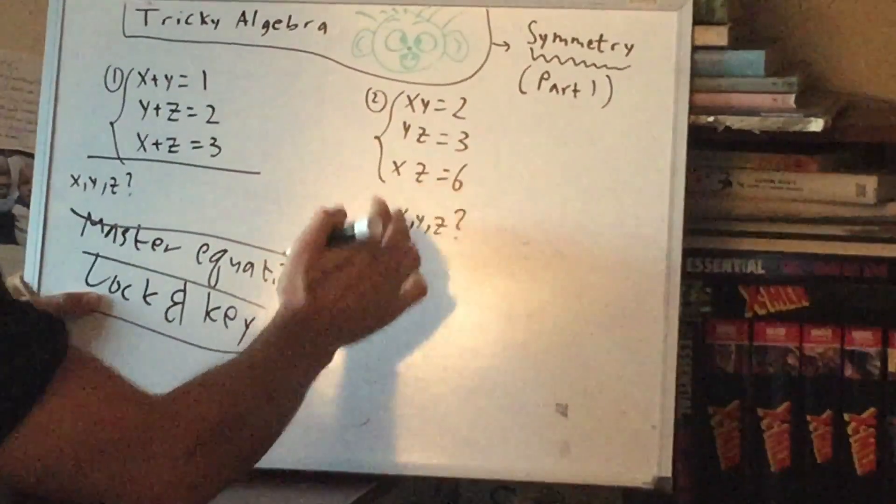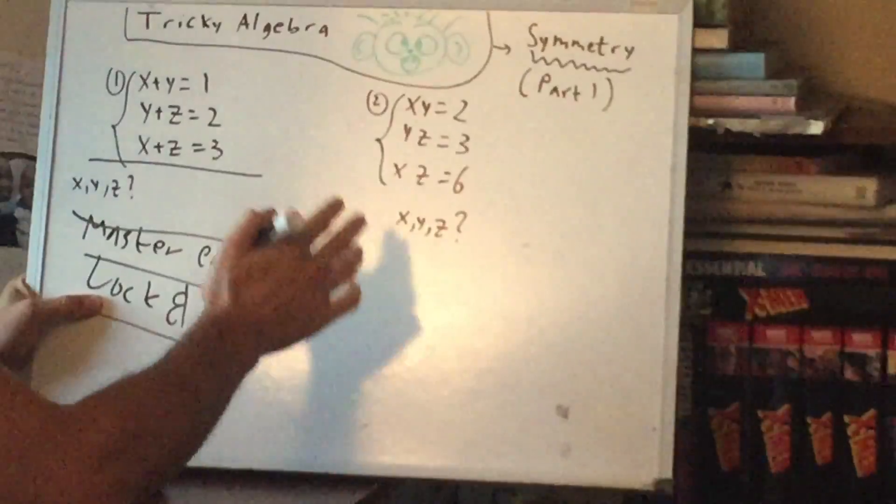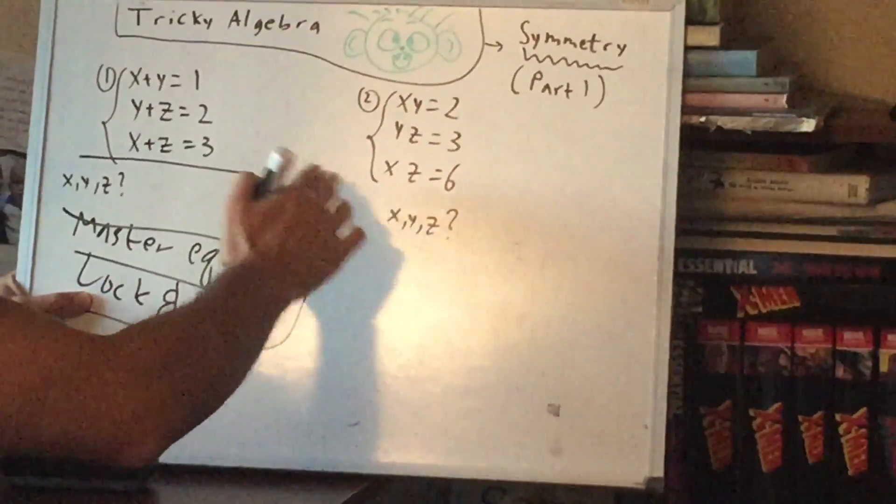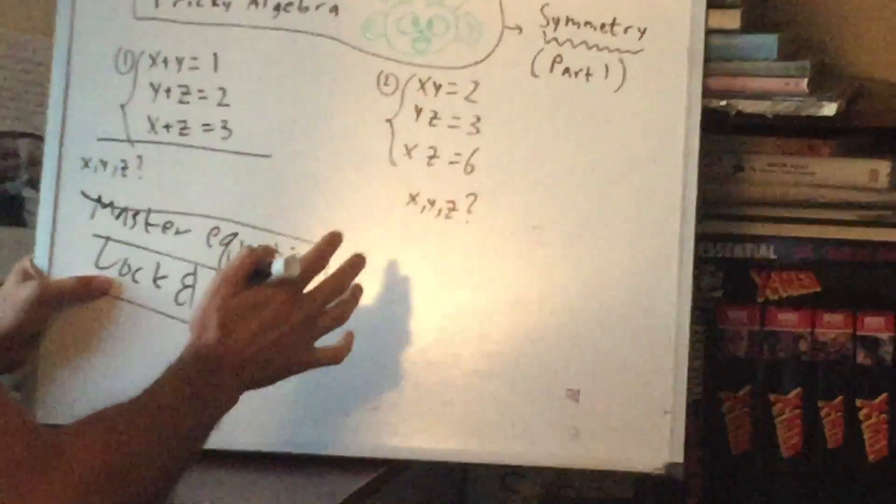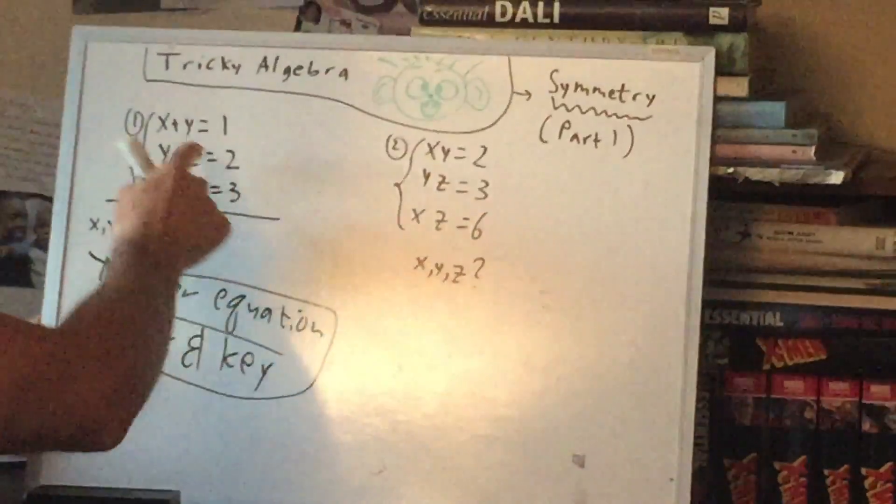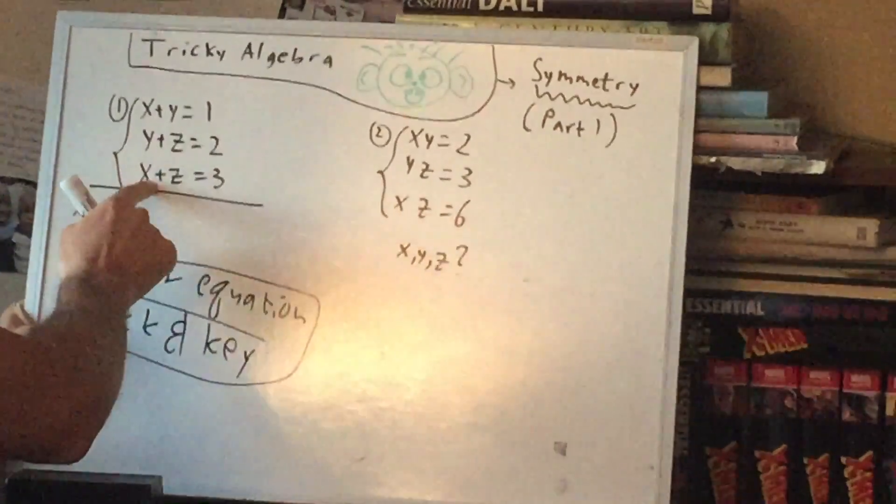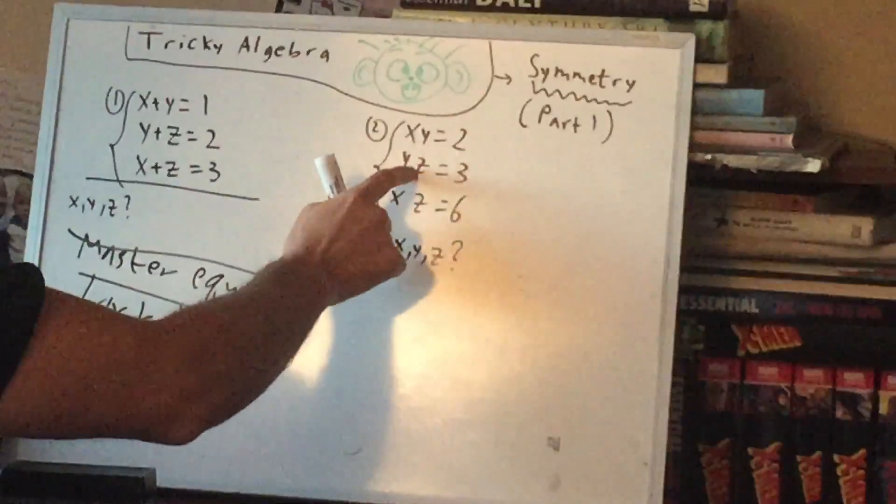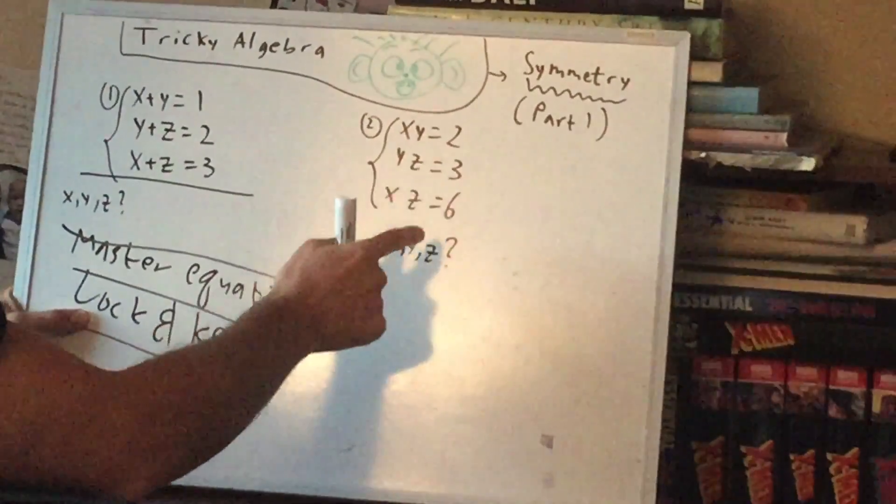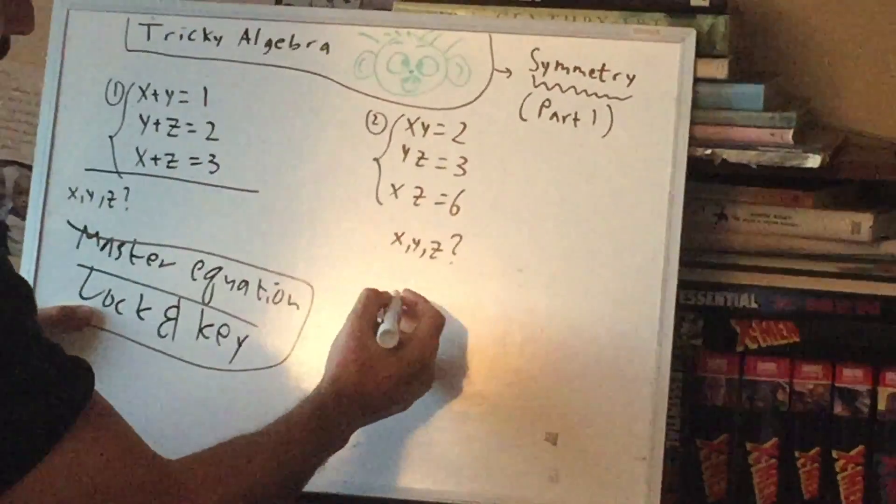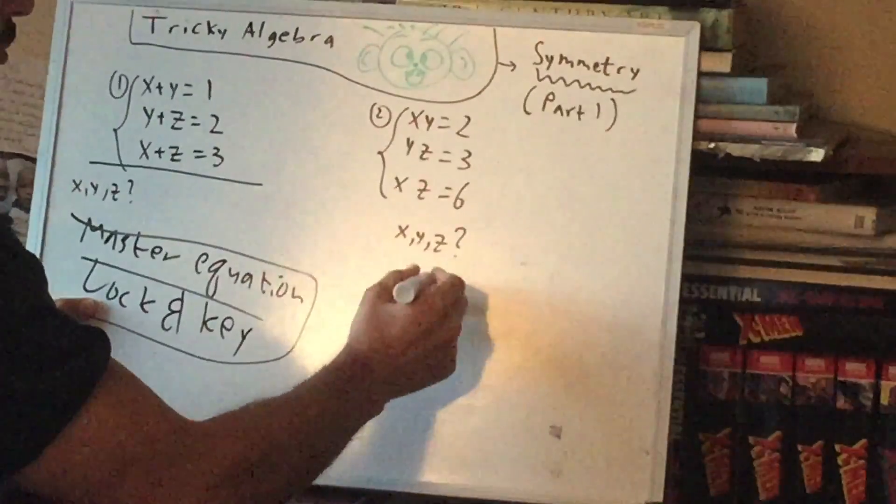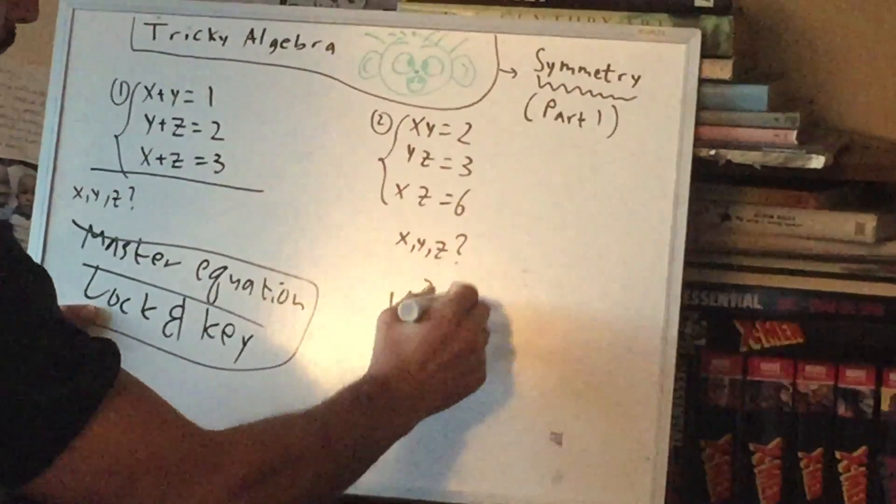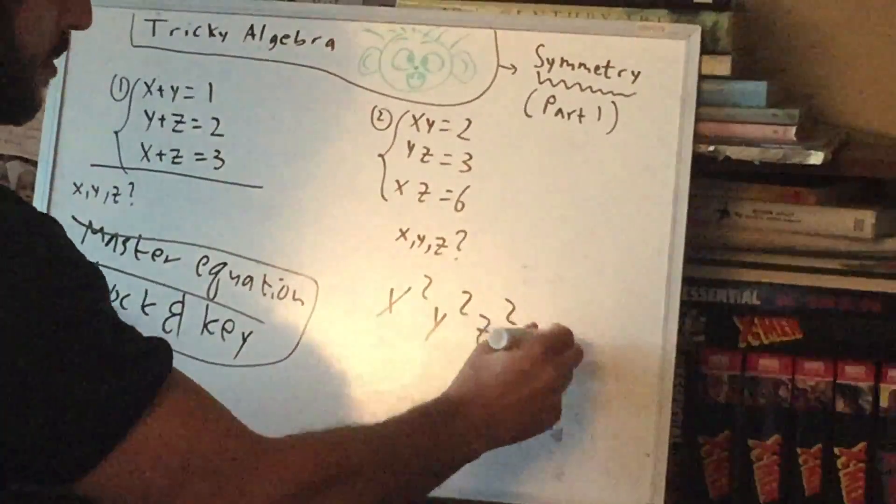That's not a bad idea. If you tried adding them, you're already doing the right sort of thing, except we want to think analogously. Meaning, here we added them because these were pluses. Here these are times, so what do we want to do? That's right, we want to multiply everything. So, there would be x squared from the two x's, y squared, z squared, equals 36.